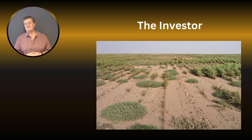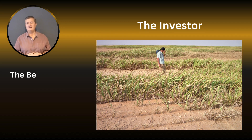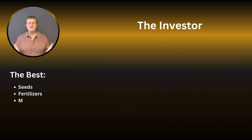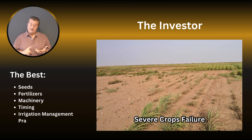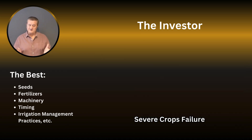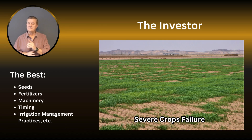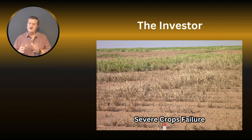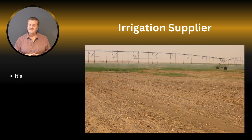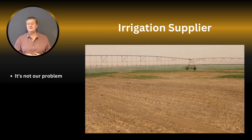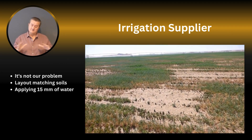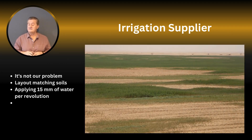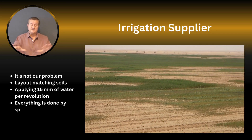And this is where the fun begins. The investor was saying that they did everything by the books — they chose the best seeds, the best fertilizers, they made sure that they irrigated according to specifications. But their crops, namely wheat and alfalfa, continuously were failing. On the other hand, the irrigation supplier said no, that's not our fault — we follow your maps religiously.